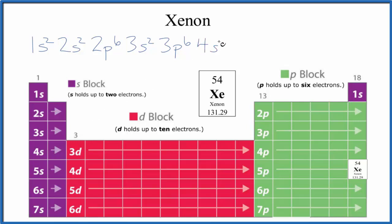And then we go down to the 3d. And d's, they can hold up to 10. So 3d10. And we're going to keep doing this until we get to 54. We have these superscripts add up to 54. These are the electrons.